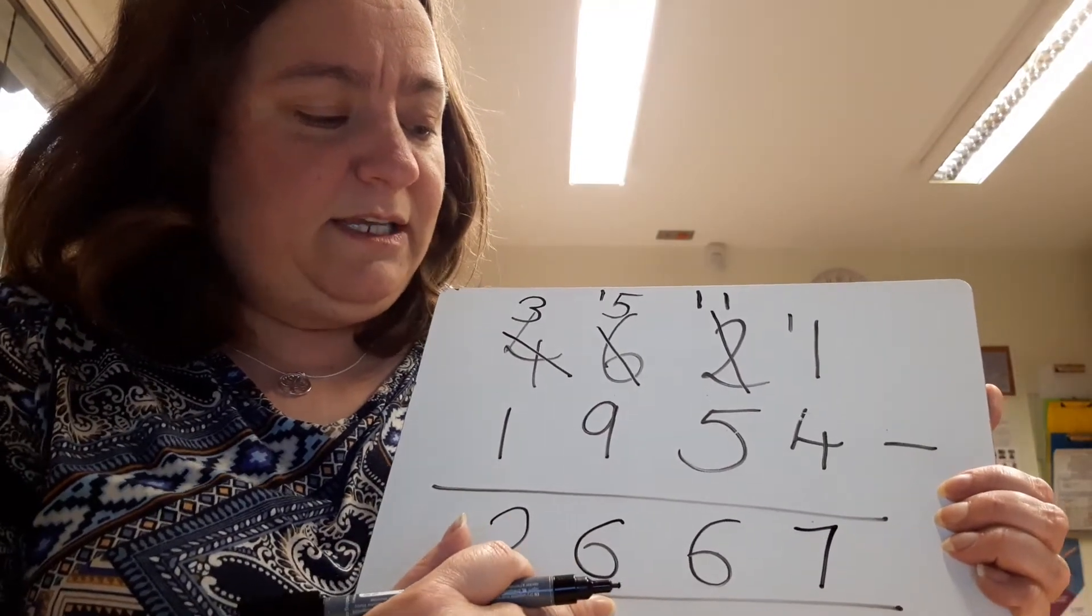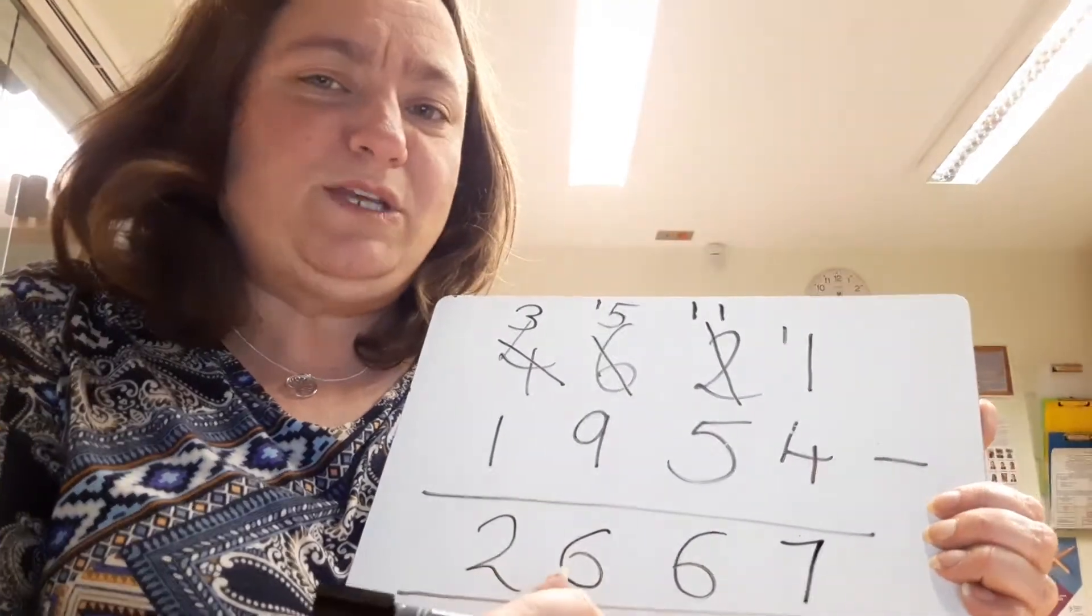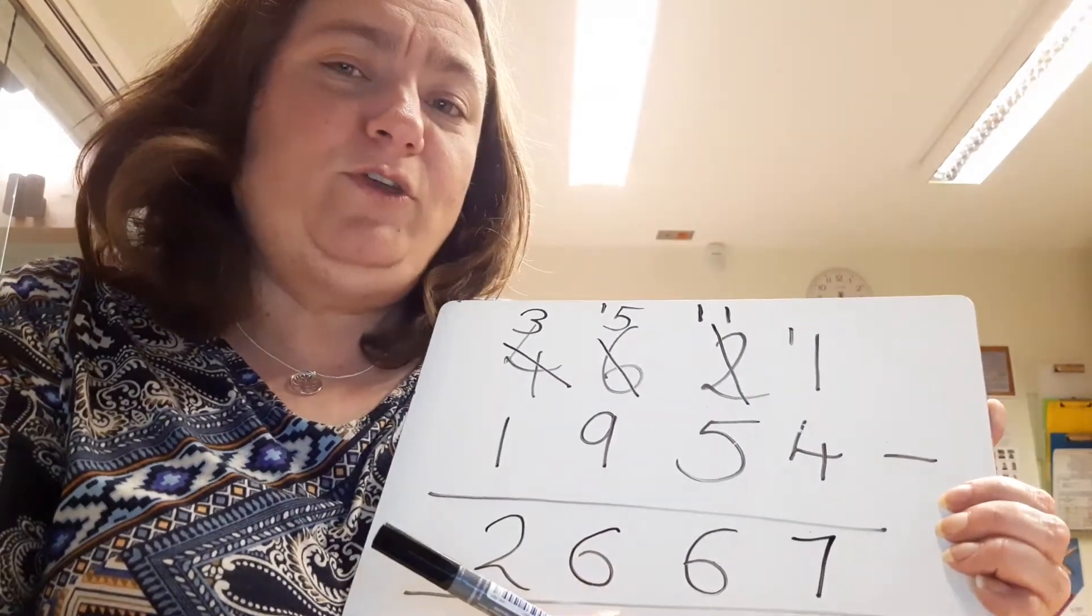2,667. It's always going to be a smaller number, and that's how you use that method.